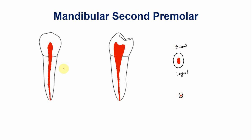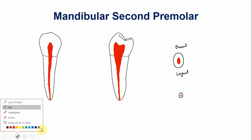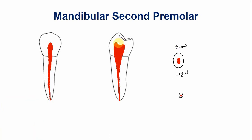With advancing age there is reduction in the size of the pulp cavity because of deposition of secondary and sometimes tertiary dentine. The pulp horns become more blunt and are not sharp anymore. In the cross-sections there is reduction in the pulp space, and in the buccolingual section there is overall reduction in size with pulp horns no longer sharp.